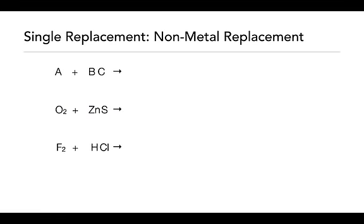In a single replacement reaction dealing with non-metals, it works essentially the same way — the difference is we're dealing with a non-metal rather than a metal. In the general format, A is the non-metal, B is a metal cation, and C is a non-metal. Since this is a non-metal replacement, C ends up by itself and we form the compound BA — A comes second because metals always come first in formulas. A has gone from a zero oxidation state down to a negative oxidation state, gaining electrons, while C has lost electrons and gone to zero.